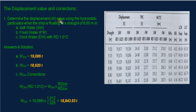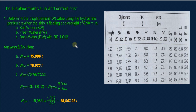Now we will proceed to our problem: determine the displacement value using the hydrostatic particulars when the ship is floating at a draft of 8.90 meters. For part A, the ship is floating in salt water; for part B, in fresh water; and for part C, in dock water with a relative density of 1.012. Dock water is considered when the relative density is between the extremes of salt water and fresh water — that is, between 1.001 and 1.025.